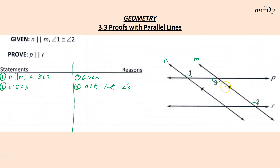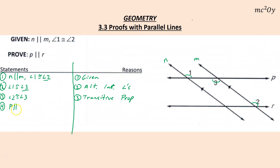Since angle 1 is congruent to angle 2 and angle 1 is congruent to angle 3, angles 2 and 3 must be congruent by the transitive property. Since those two are congruent, we know P is parallel to R by the alternate interior angles converse — because we're stating the lines are parallel based on those angles being congruent.